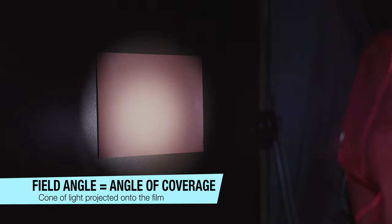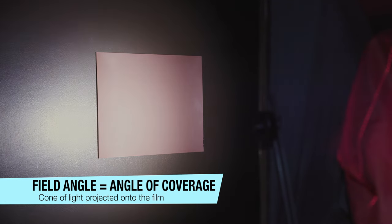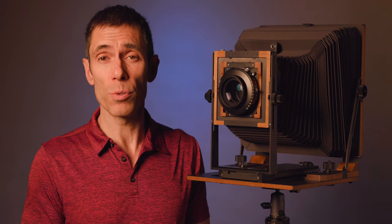The greater the angle of coverage, the larger the diameter of the cone of light projected onto the film plane. It is important to note that this is often confused with angle of view, which is the cone of light in front of the lens.